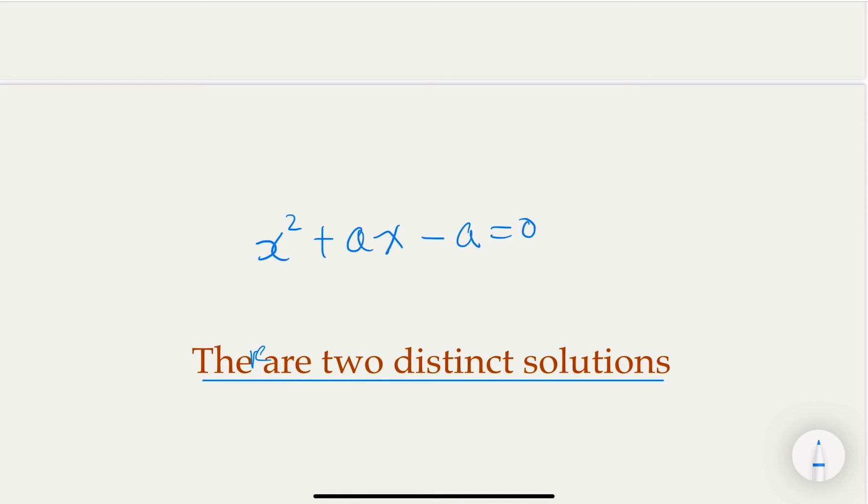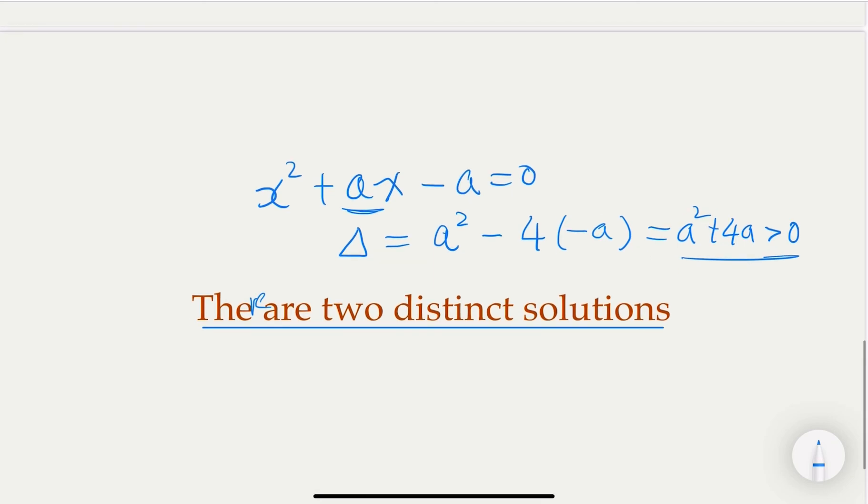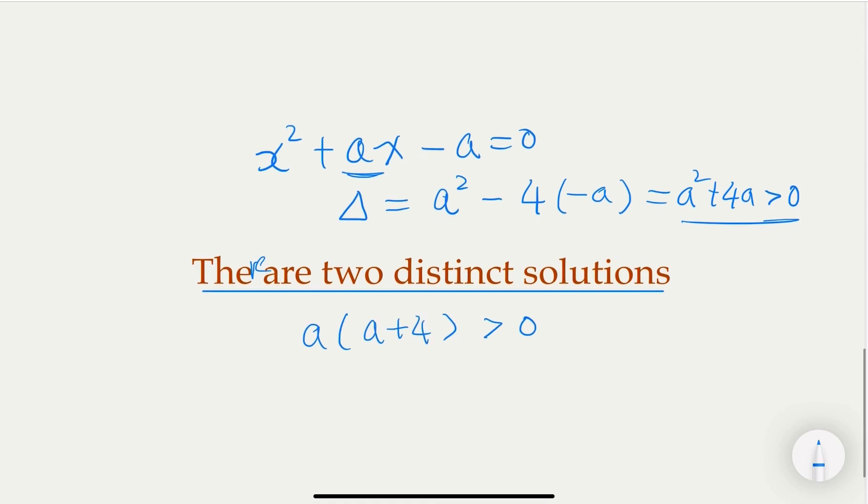In order for that to hold, we know that discriminant, which is b² - 4ac, the b² is a² minus 4, and a is 1, c is negative a, so a² + 4a must be strictly greater than 0. So in order for that to hold, we know that a(a + 4) has to be strictly greater than 0, so a is either less than negative 4, or a should be greater than 0.